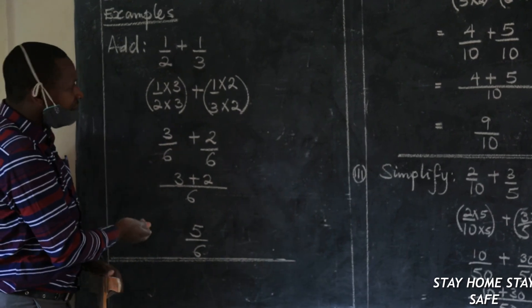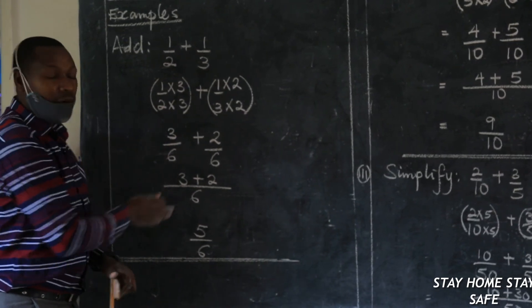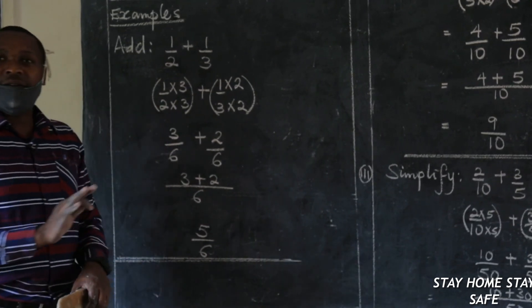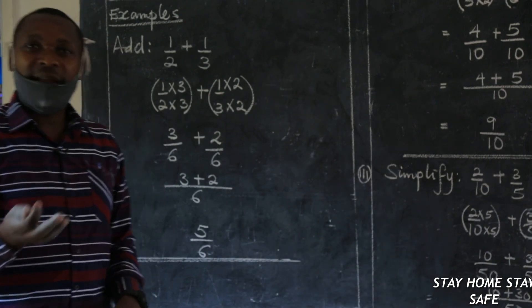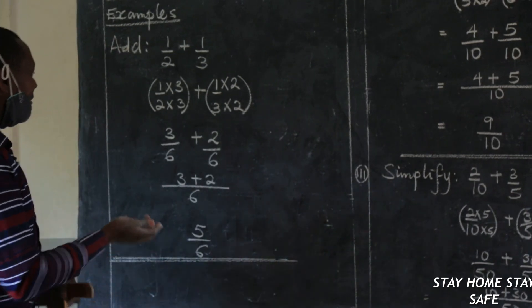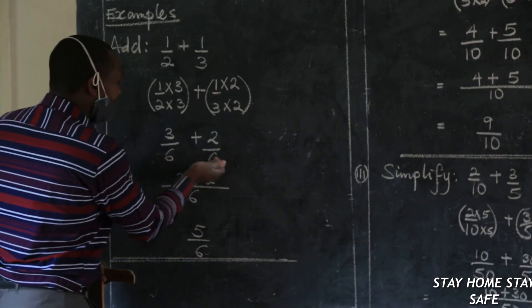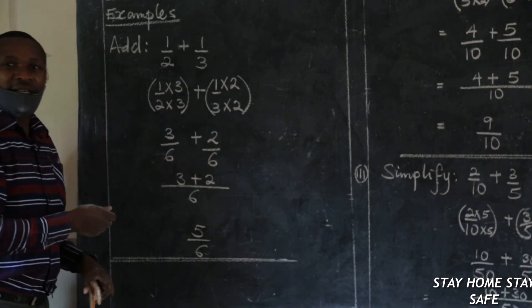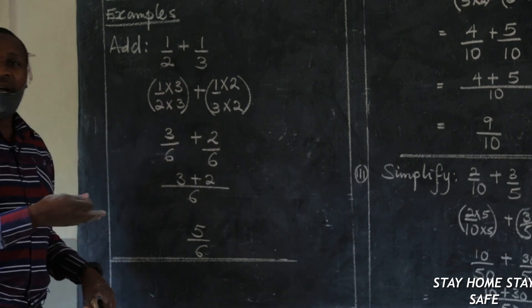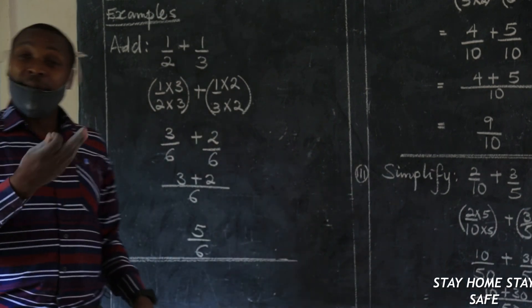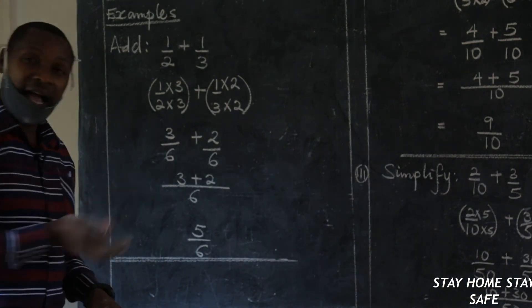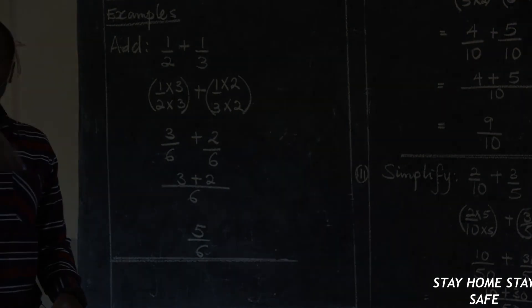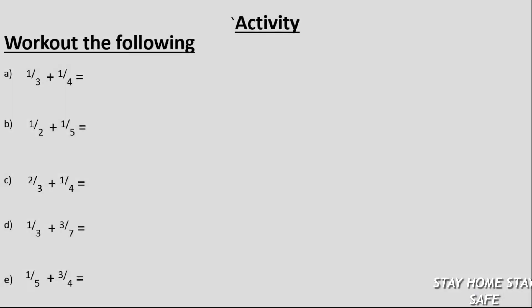Thank you for watching this simple lesson of addition of fractions with different denominators. The method being used in this lesson was equivalent fractions. Why do we apply equivalent fractions? To make sure that it brings us to the same denominators. And we add — we maintain the same denominators, add the numerators, and we go. Thank you so much.